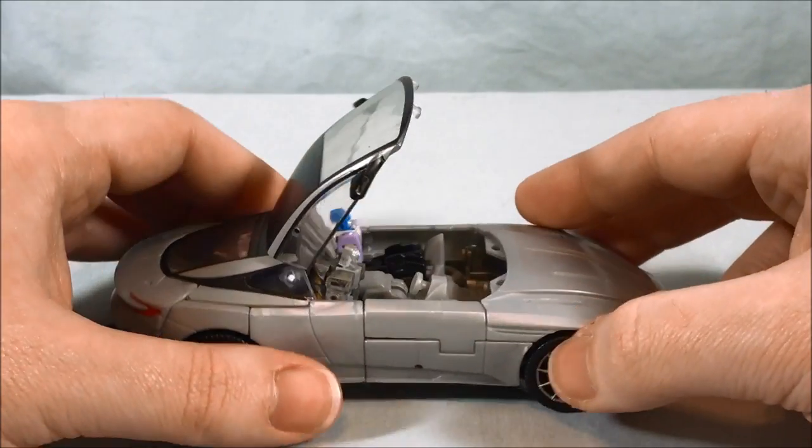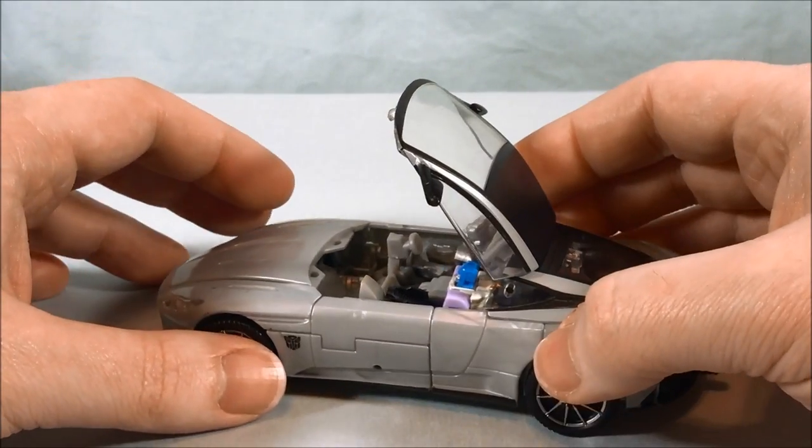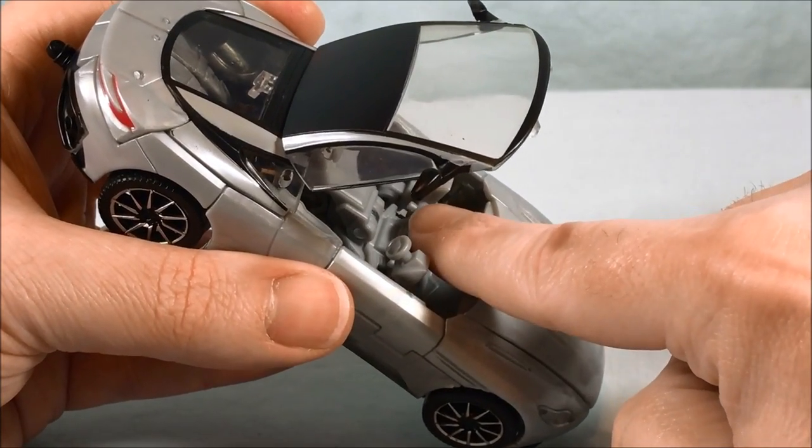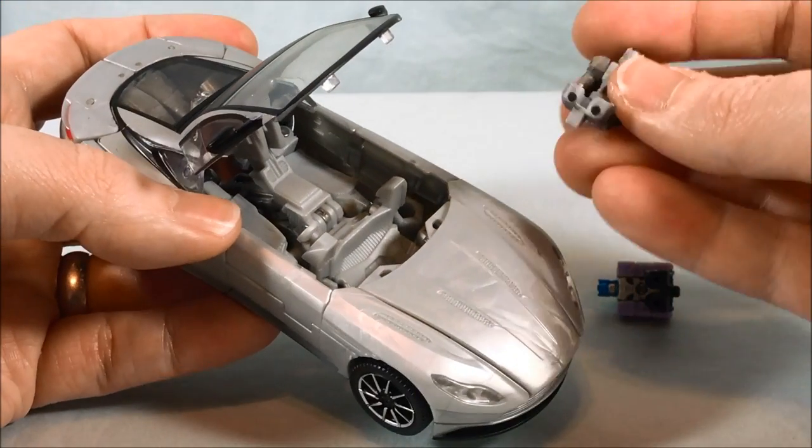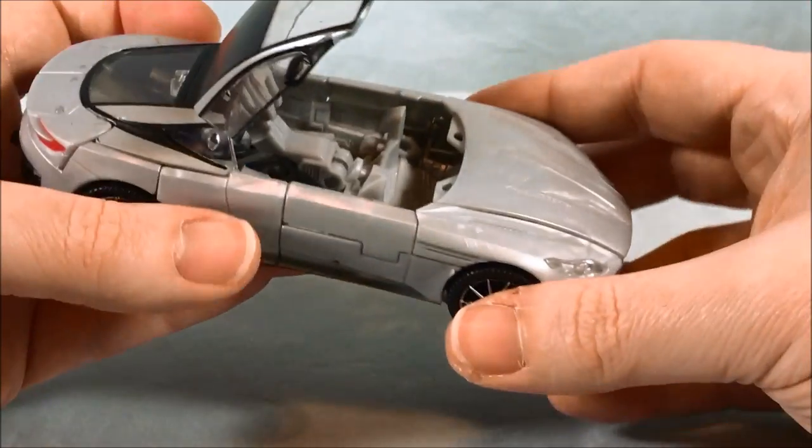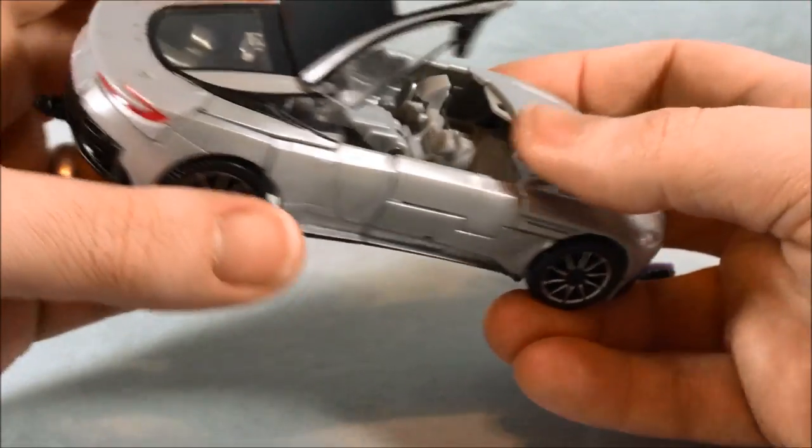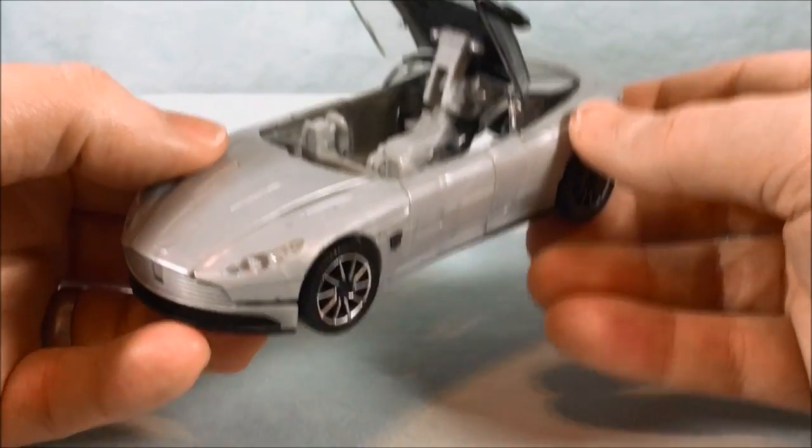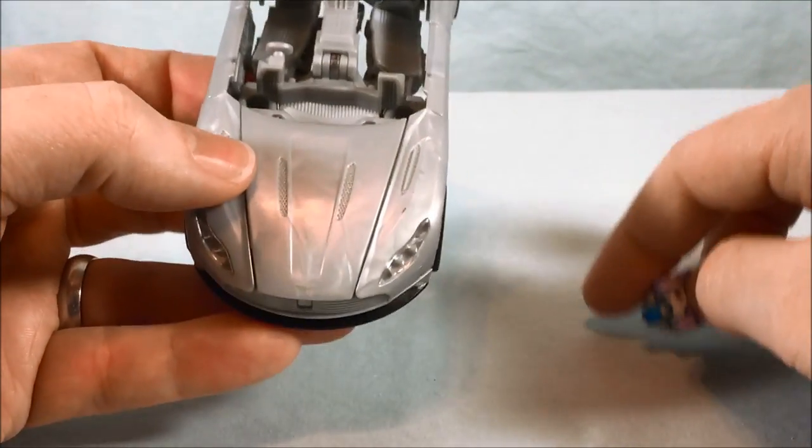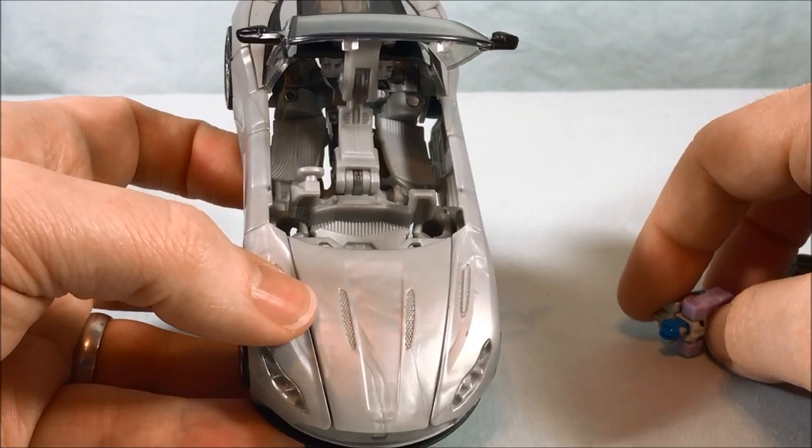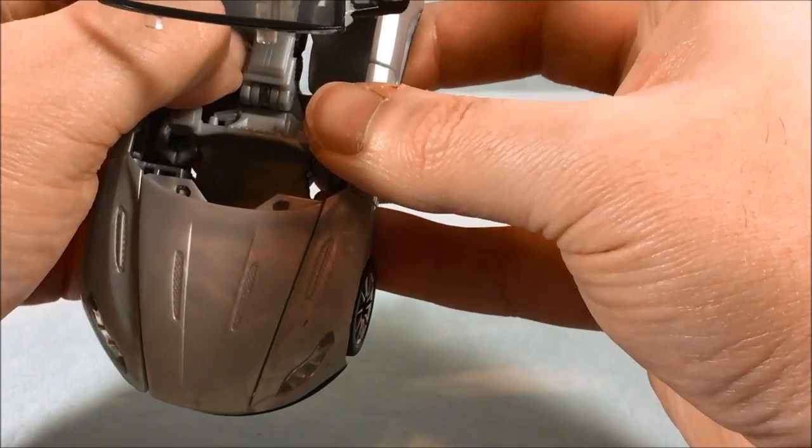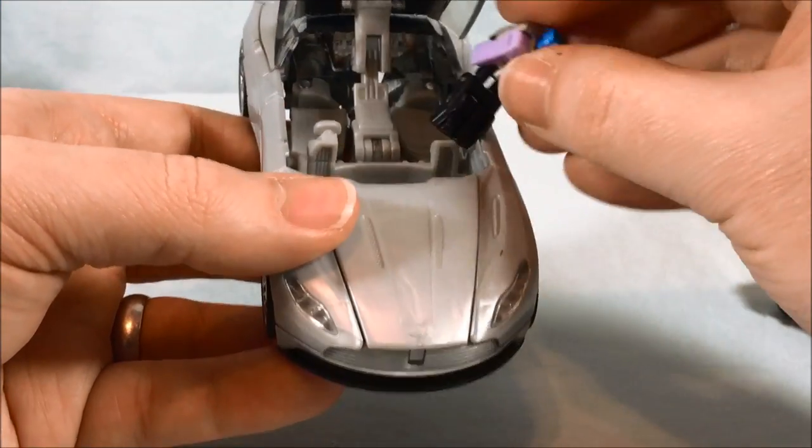But the coolest part, my favorite part - you can lift this up and there are spots for two, count them two, Titan Masters to ride inside this car. How fantastic is that? If you get adventurous there are pegs, you can see one right there and another one right there. If you can try to get the peg in his foot they'll stay in place, but I don't even bother, it seems really difficult. The steering wheel is on the other side of the car. I believe in the movie they were driving around in England so it could be because of that, or because it's the Japanese version.